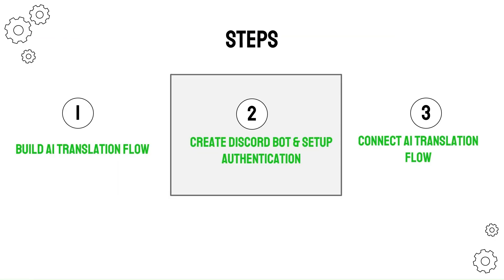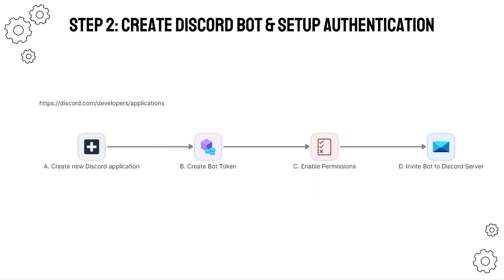The second step is to create the Discord bot and set up authentication. To do this, we're going to walk through each of these steps: create a new Discord application, then create a bot token, enable the permissions, and finally invite the bot to our Discord server.